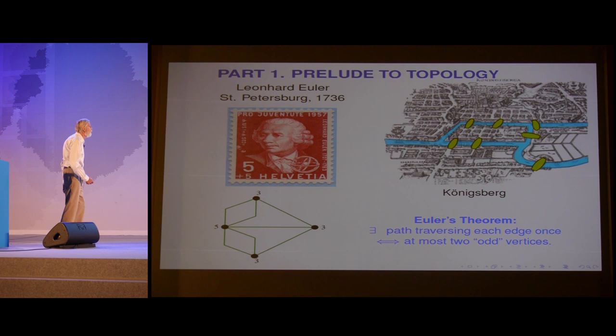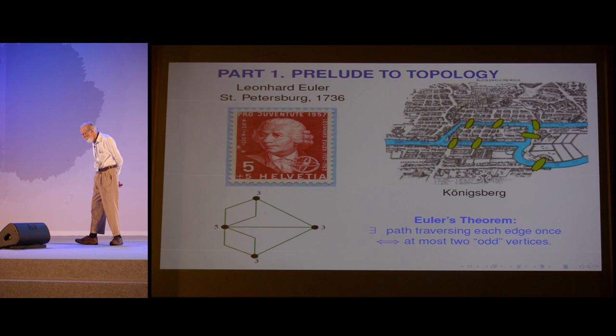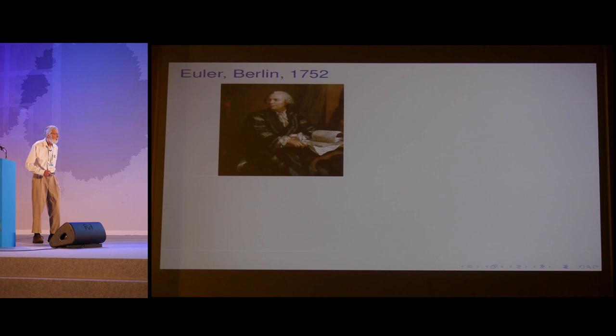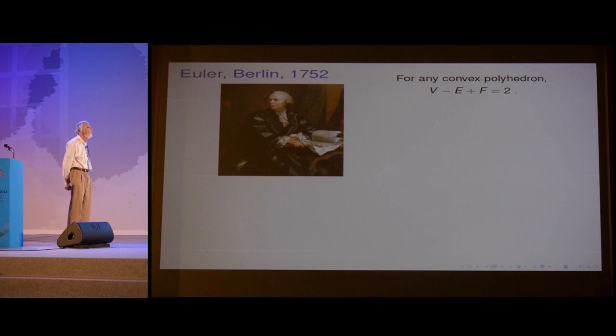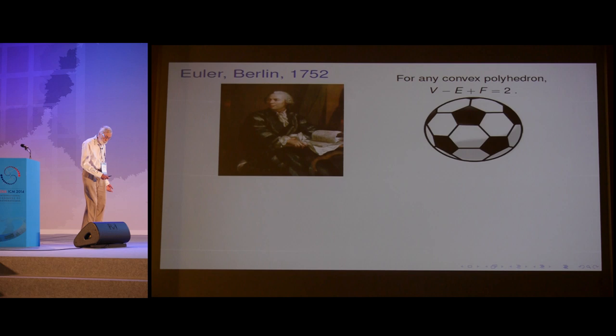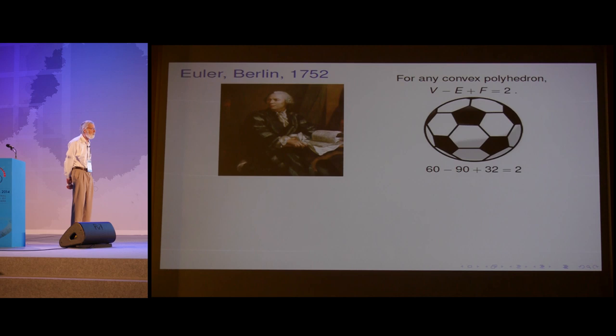The next hint of topology came a little later, again by Euler. He showed that for any convex polyhedron, the number of vertices minus the number of edges plus the number of faces is always equal to two. Here is a typical example: a roughly regular polyhedron with 60 vertices, 90 edges, and 32 faces, giving us the magic number two.